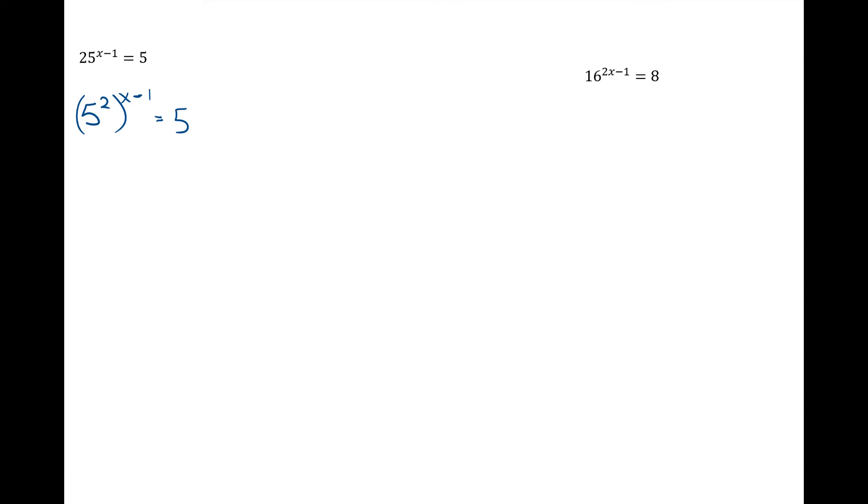That means, okay, so 25 got rewritten as 5 squared. But now remember your power property. When you're taking a power to a power, you multiply. So this is 5 to the 2(x-1). Notice how I distributed in that 2 and multiplied to both of them. Real important to distribute that multiplication there. Now my bases are the same. So I can say the exponents must be equal. And I solve for x. Add 2 to both sides. Now I'll divide by 2. x is equal to 3 halves.